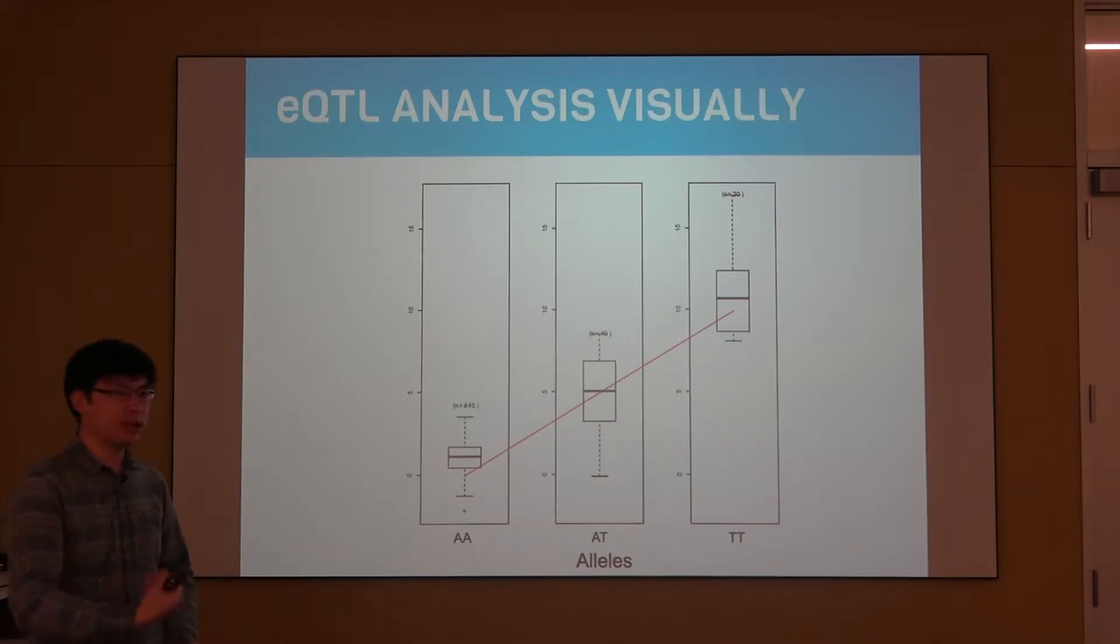However, as we get increasing numbers of the T allele, for example AT, there's higher expression and those who are homozygous TT have the highest gene expression. We're looking for this type of linear trend between the number of alleles someone has and their gene expression.